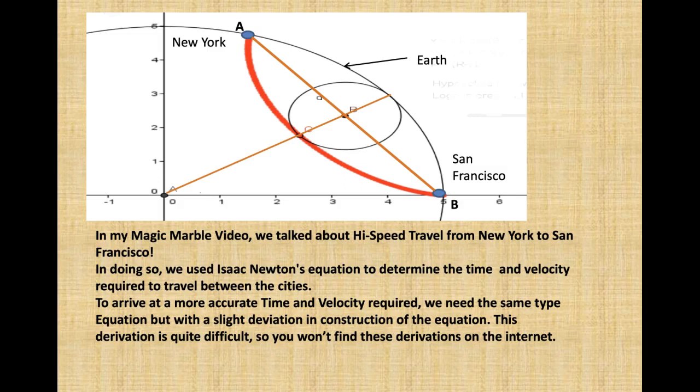To arrive at a more accurate time and velocity required, we need the same type equation but with a slight deviation in construction of the equation. This derivation is quite difficult, so you won't find these derivations on the internet.